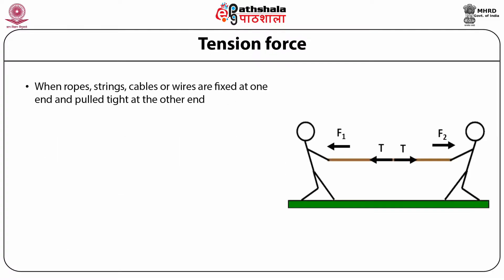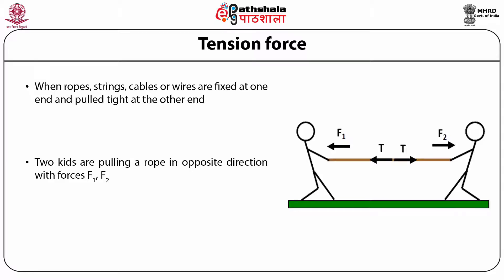Tension force occurs when ropes, strings, cables, or wires are fixed at one end and pulled tight at the other. For example, two kids pulling a rope in opposite directions with forces F1 and F2: the tension developed in the rope is opposite to the applied force. Tension force is always in the opposite direction of the applied force. If the two forces are unequal, the rope gets pulled toward the side where the force is larger.